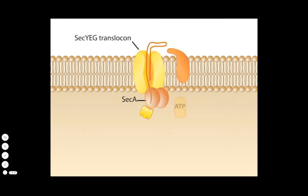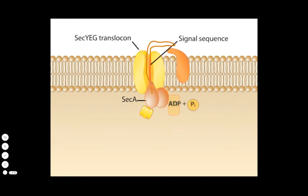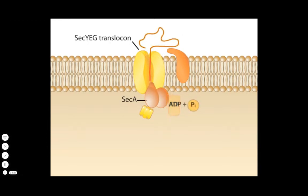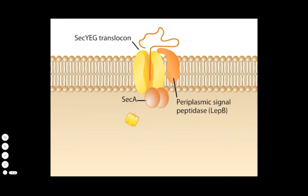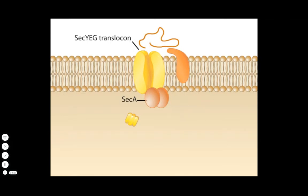Proteins needed in the periplasm have cleavable signal sequences at their amino terminal ends. Immediately following translocation into the periplasm, periplasmic signal peptidases — such as one called LepB — snip off the amino terminal signal sequence of the protein. The mature protein is then released into the periplasm.